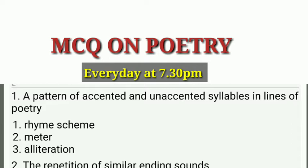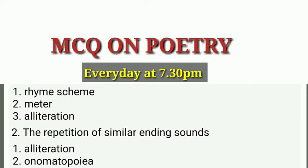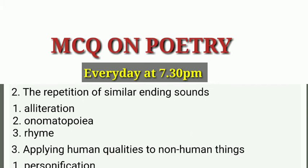Question 1: A pattern of accented and unaccented syllables in a line of poetry — which are accented and unaccented syllables arranged in a pattern made by poetry, so what do we call it? Options are rhyme scheme, meter, and alliteration. The answer is meter.